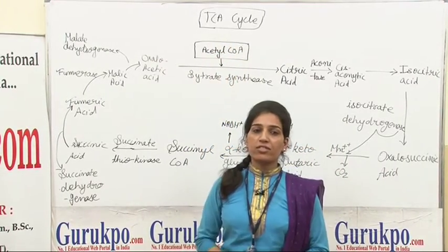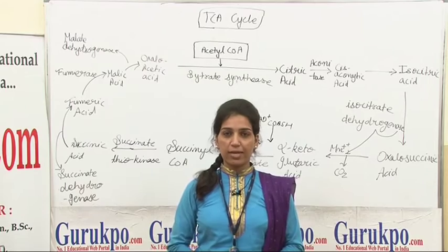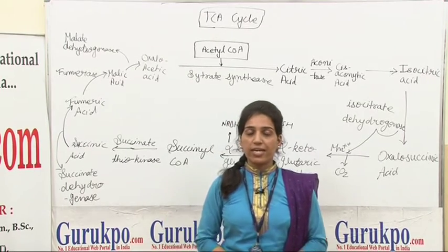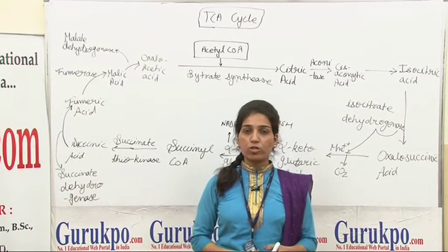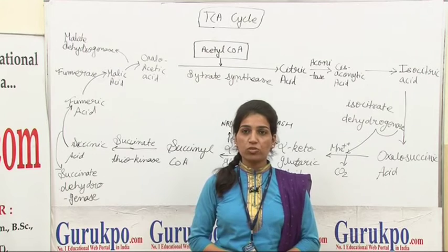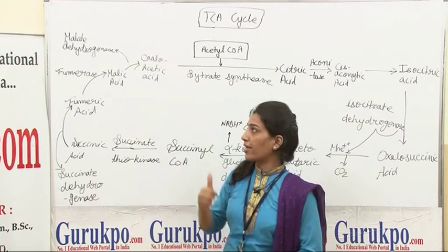This cycle was first discovered by Hans Krebs, and in this cycle three groups of carboxylic acid take place, so it is known as TCA cycle.